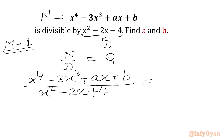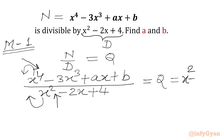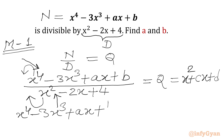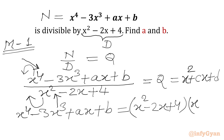This must be equal to quotient q. The degree of the numerator is 4, degree of denominator is 2, and leading coefficients are both 1. So our quotient must have degree 2 with leading coefficient 1. We can assume q is in the form x² plus cx plus d. Now we can cross multiply and write x⁴ minus 3x³ plus ax plus b equal to (x² minus 2x plus 4)(x² plus cx plus d).